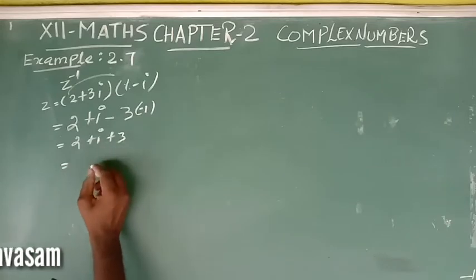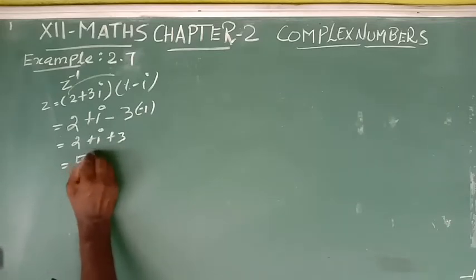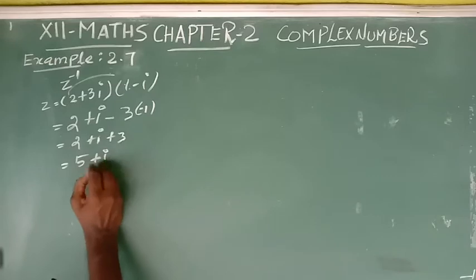Adding these together, we get Z equals 5 plus i.